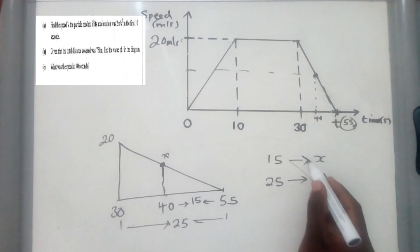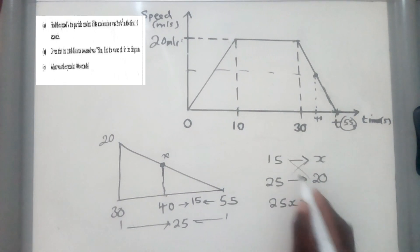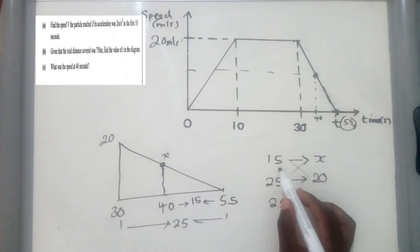So now since you have this, you can now cross-multiply. So it will be 25 by x, 25x, which is equal to 15 by 20. What are we getting? We're getting 300.